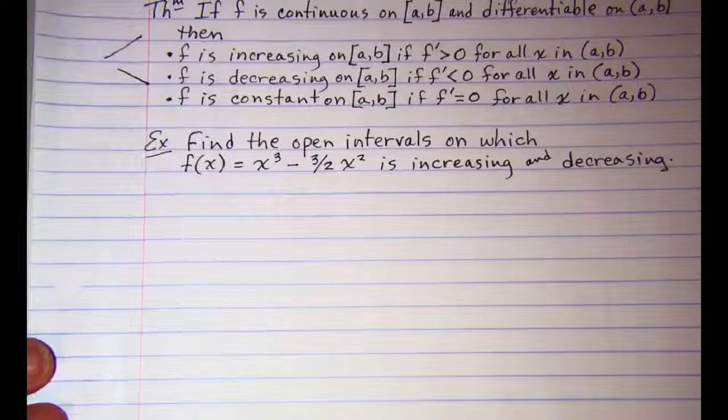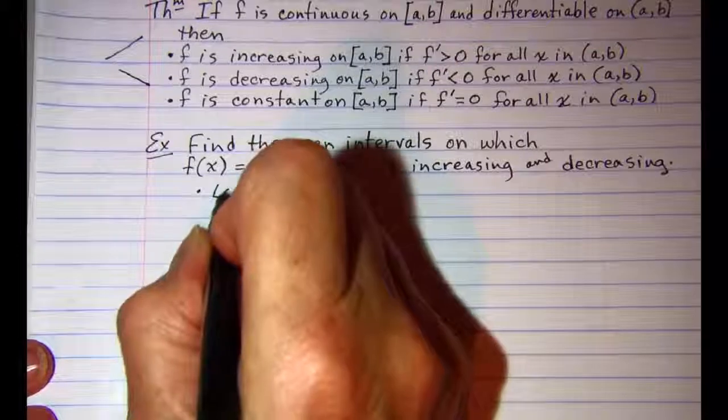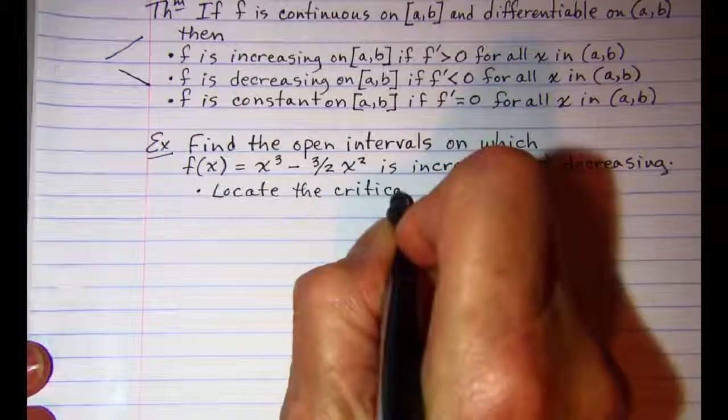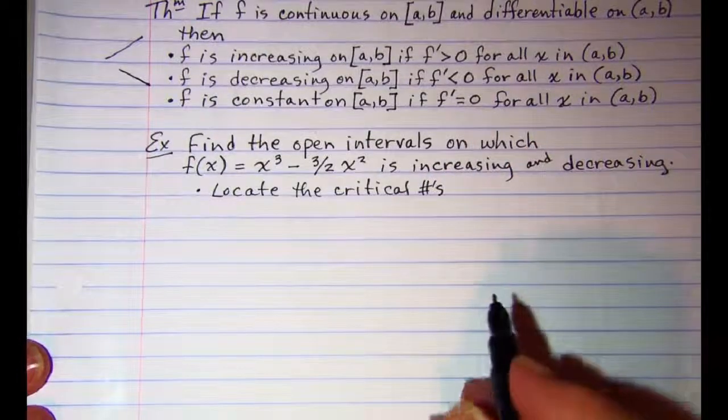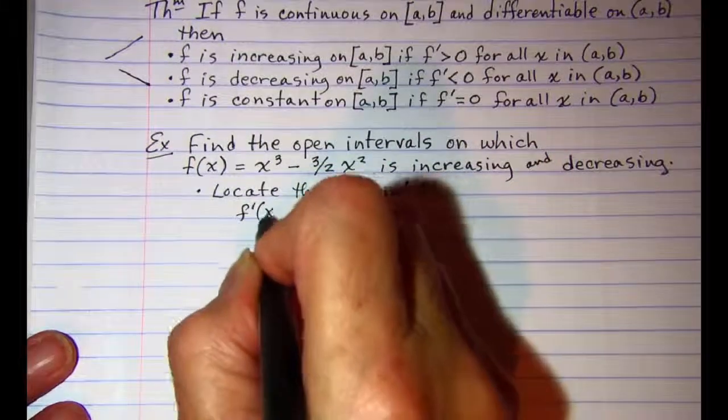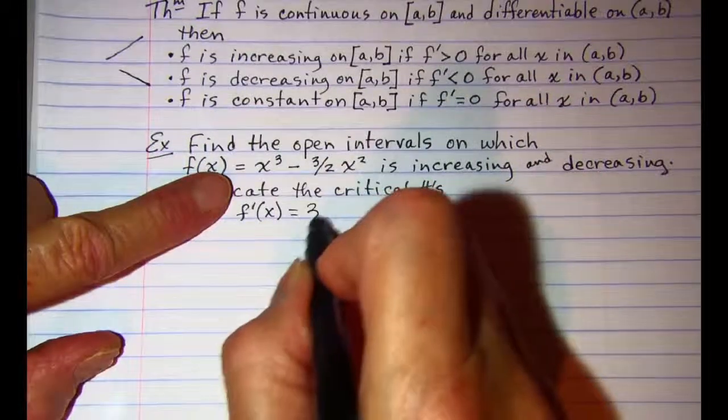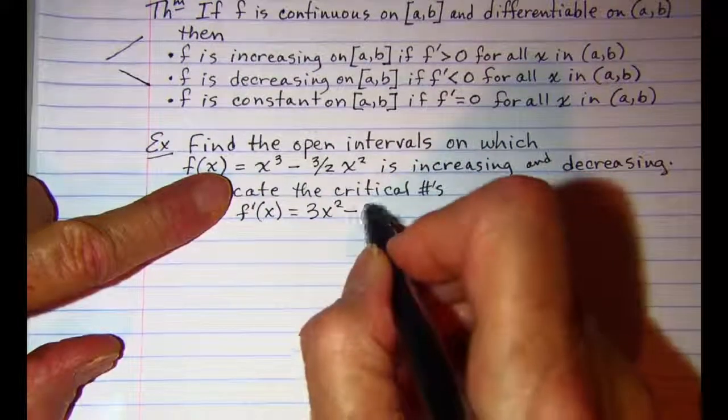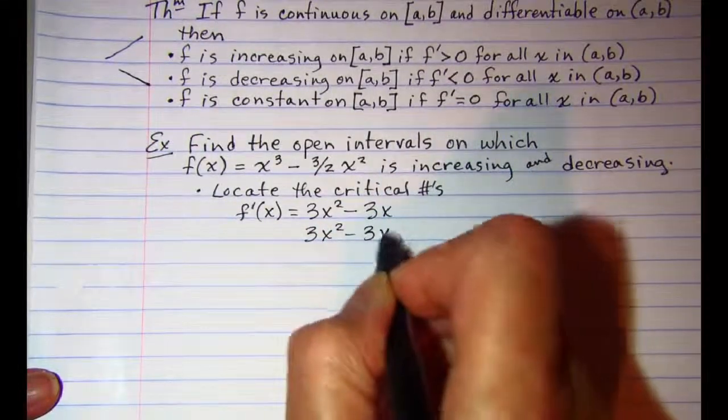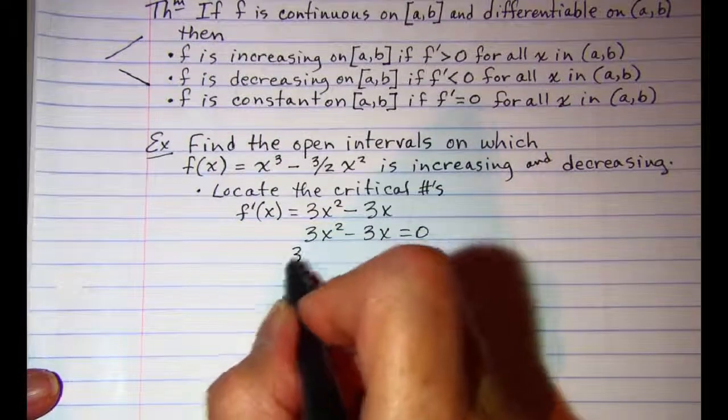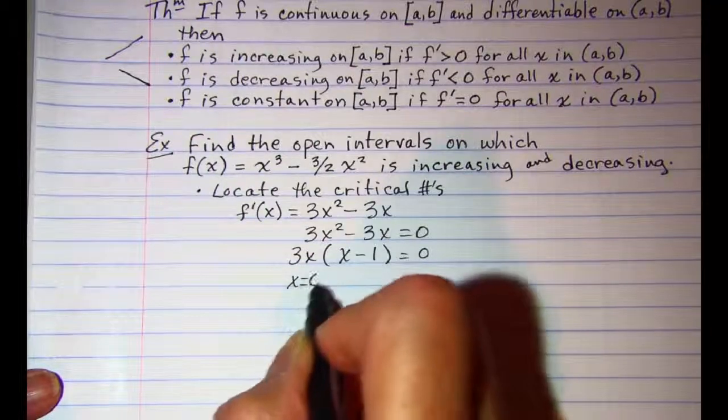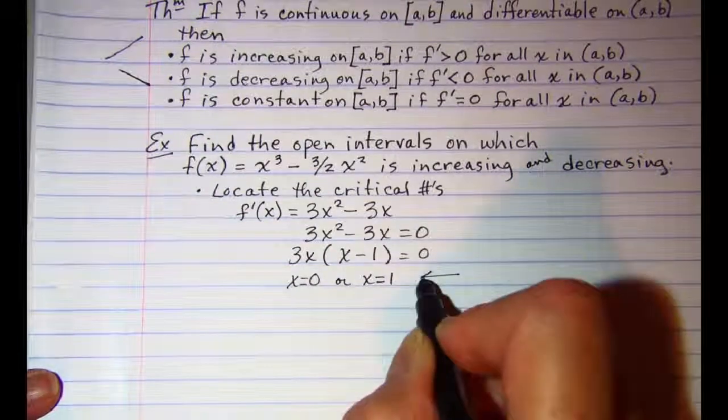So our first step is to locate the critical numbers, and we'll do that by finding the derivative and then setting the derivative equal to 0. I'm going to factor out a 3x, so x = 0 or x = 1. These are my critical numbers.